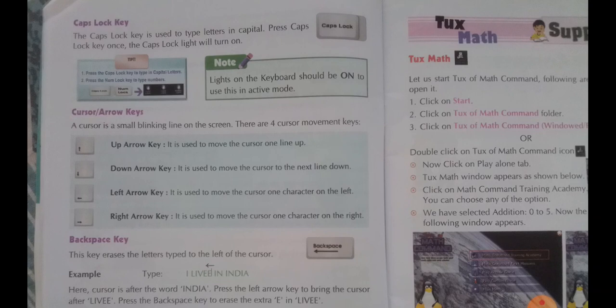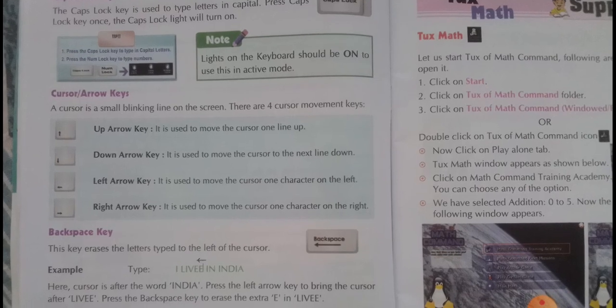Next, arrow keys. There are four arrow keys in our keyboard: up arrow key, down arrow key, left arrow key, and right arrow key. The up arrow key is used to move the cursor one line up. The down arrow key is used to move the cursor to the next line down. The left arrow key moves the cursor to the left side, and the right arrow key moves the cursor to the right side.